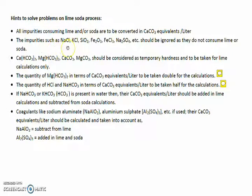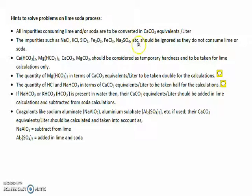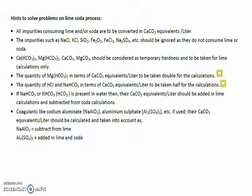Impurities such as sodium chloride, potassium chloride, SiO₂, ferric oxide, ferric chloride, sodium sulfate, and other such salts should be ignored as they do not consume lime or soda. These salts should not be considered while calculating the soda and lime quantities as lime and soda do not react with them.